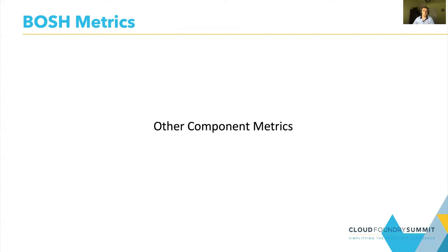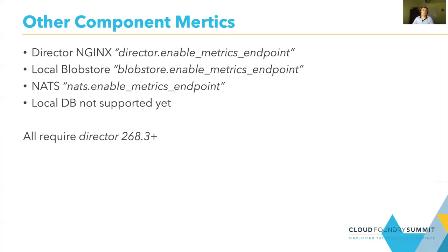Let's look into the metrics provided by the other components on the BOSH director. Most of the components have support for metrics and you can enable the metrics with the properties listed on the slide. If you enable the metrics, they will be exposed locally, so you have to find a way to forward the metrics to your monitoring stack. All the metrics are available with director version 268. Unfortunately, there is no support in the current BOSH release for local DB metrics. Also, if you have a setup with an external blob store and external DB, you have to check with your provider what kind of metrics are supported. We don't have much experience with these metrics because we had to postpone our work here in favor of BOSH DNS metrics, but we have plans to invest here and consume the metrics.